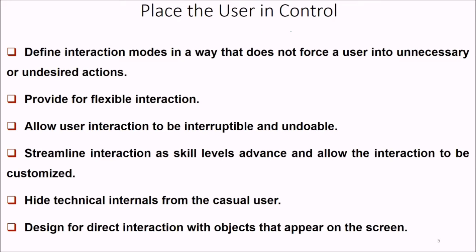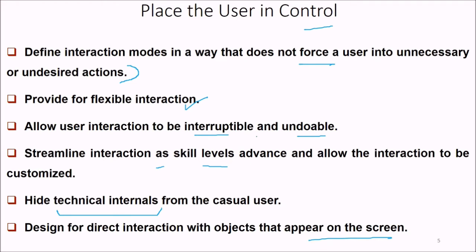Placing the user in control means you define interaction modes in a way that you are not forcing the user into unnecessary or undesired actions. You provide flexible interaction and allow user interaction to be uninterruptible and undoable. You need to streamline interaction as skill level advances and allow interaction to be customized. Hide all technical internals from casual or naive users, and design direct interaction with objects that appear on the screen, like icon types.